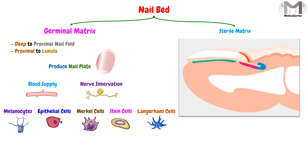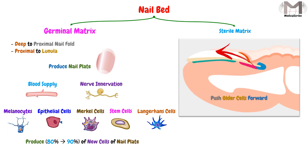This region produces about 80 to 90 percent of the new cells of the nail plate. When these new cells are produced, they push the older cells forward and take their places, then the newest cells push them forward in turn, and so the cycle continues. Keep in mind that if this region is damaged, it is highly possible to have nail plate irregularities, because this region produces most of the new cells of the nail plate.